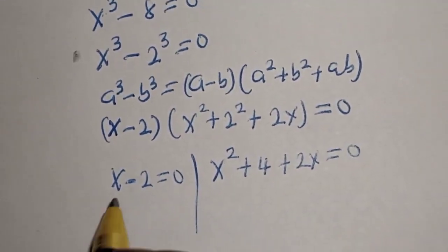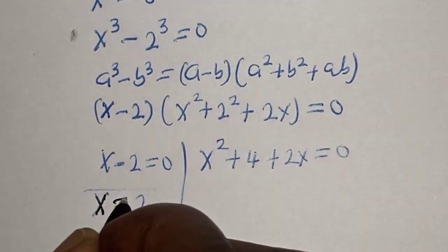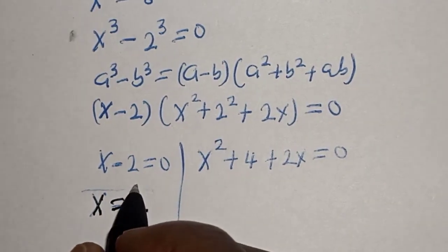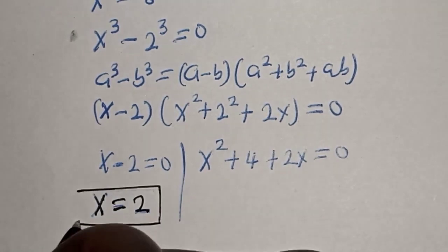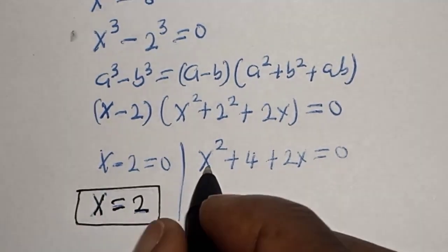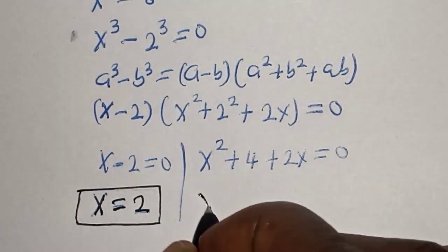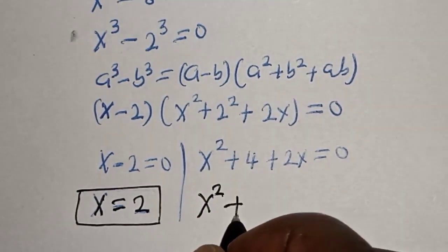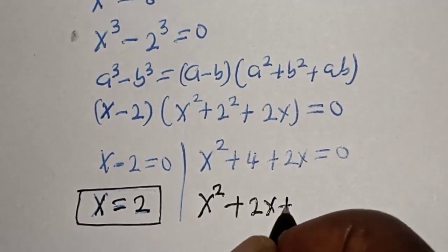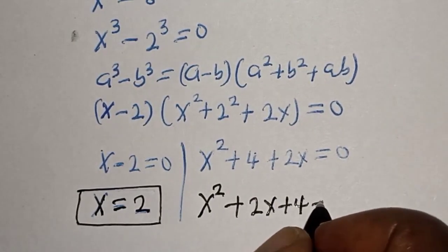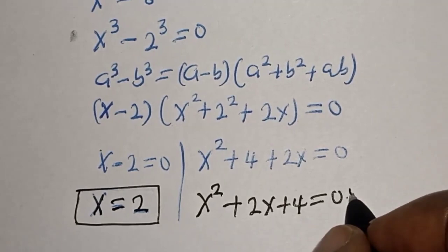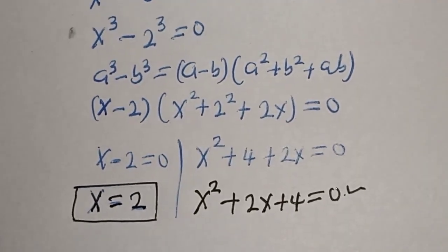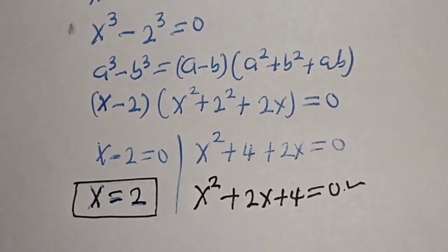From the first case, s is equal to 2, which is one of the values. From the second case, s squared plus 2s plus 4 is equal to 0. This is a quadratic equation which can be solved using the quadratic formula.